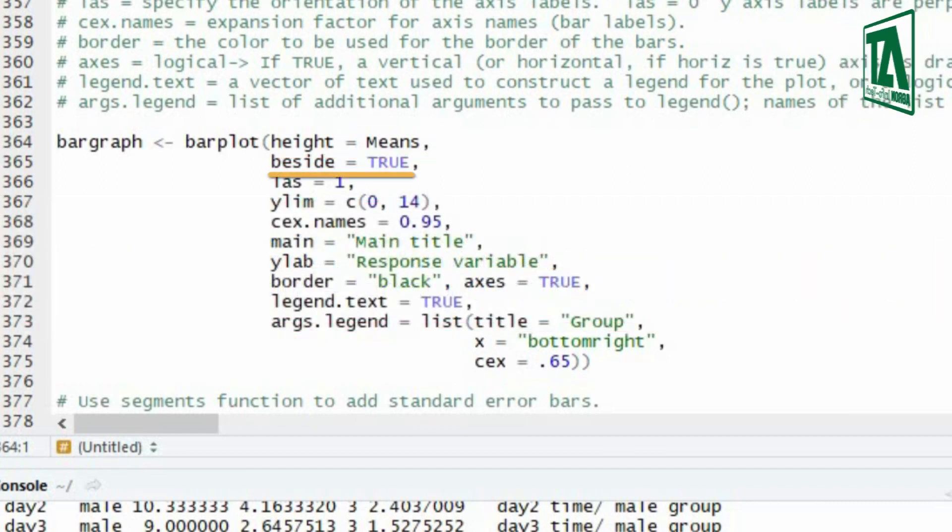False value for beside will result in stacked bars. True value will result in juxtaposed bars.